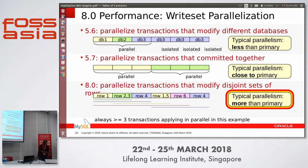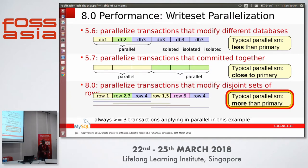We know which transaction depends on what tuples — that information we already have. Using that write-set information, if you increase the parallel threads on the replica, we can parallelize all non-conflicting transactions. As long as there is a thread available and there is no conflict, we can achieve it. In fact, if you have more parallel threads on the replica, you can even achieve much more performance on the replica than on the primary.